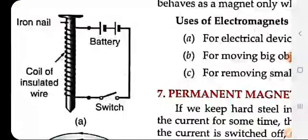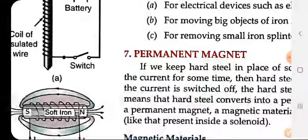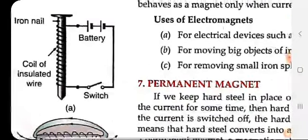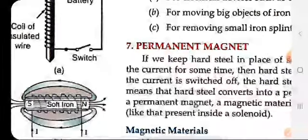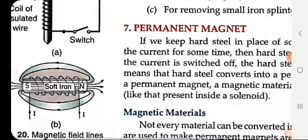This is how it behaves. We have taken iron nail. You can make this kind of thing at your home also. You can take a small battery and coil of insulated copper wire and it will start behaving as a magnet. But as soon as you switch off the circuit, the magnetism will vanish and the iron nail will stop attracting things.